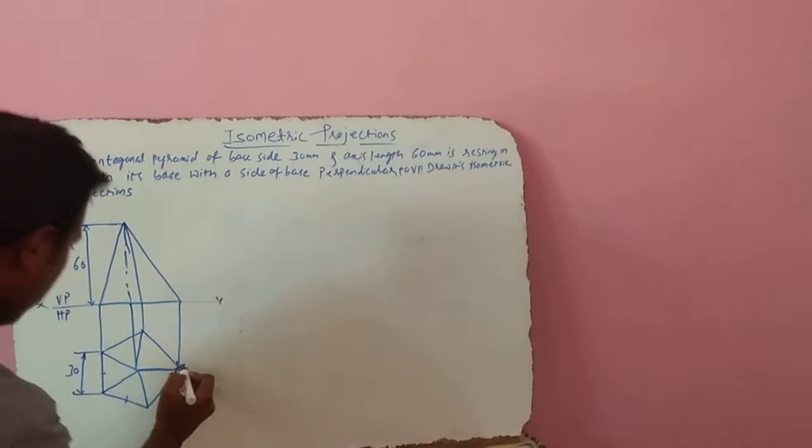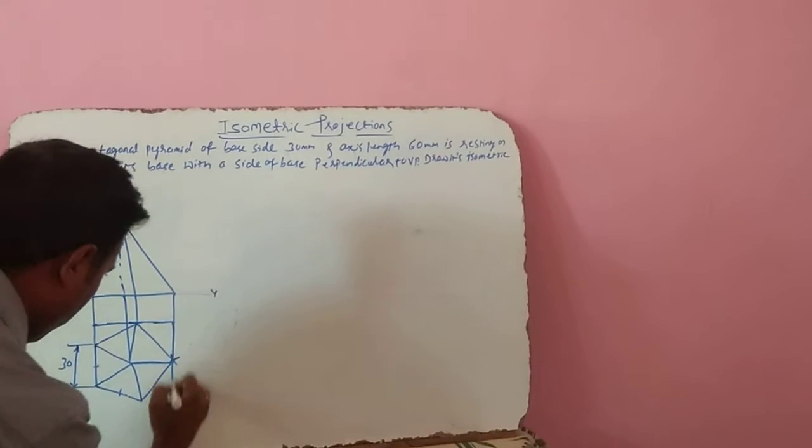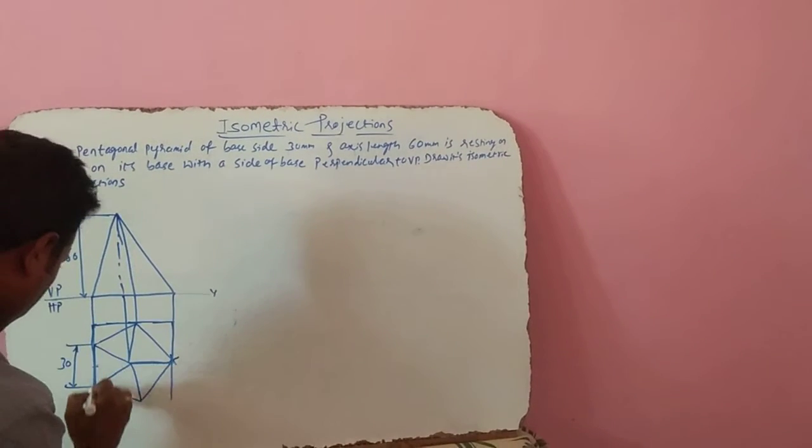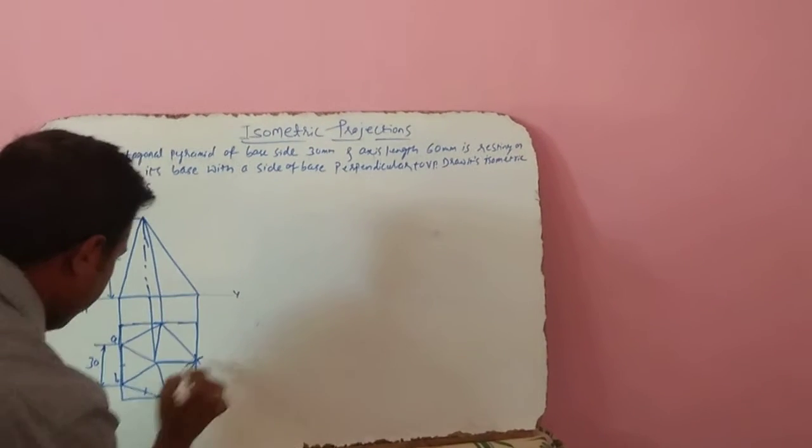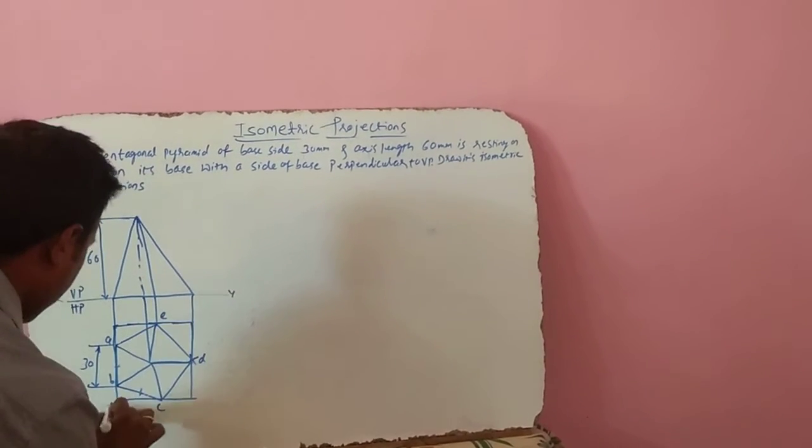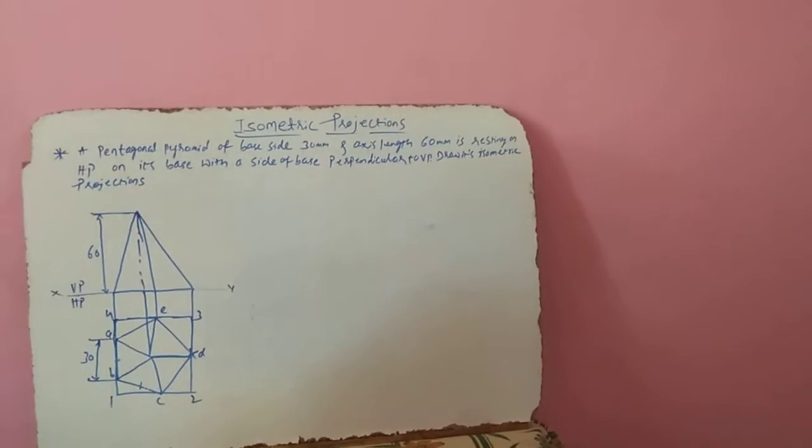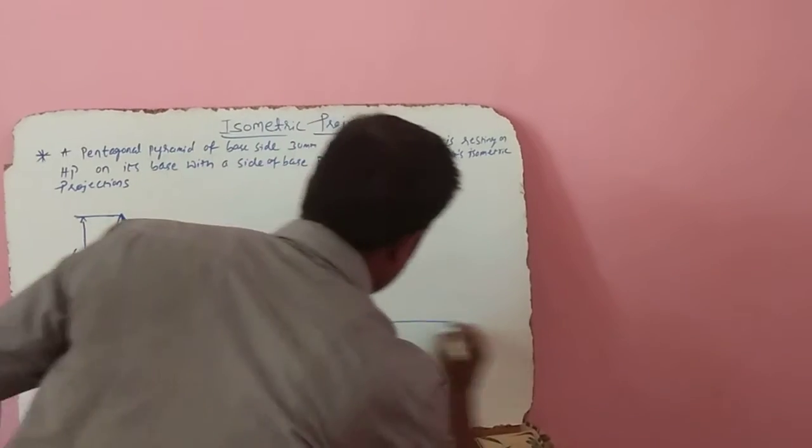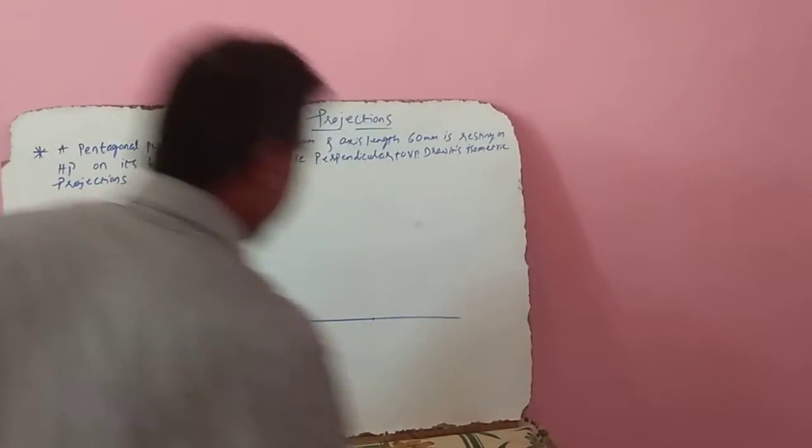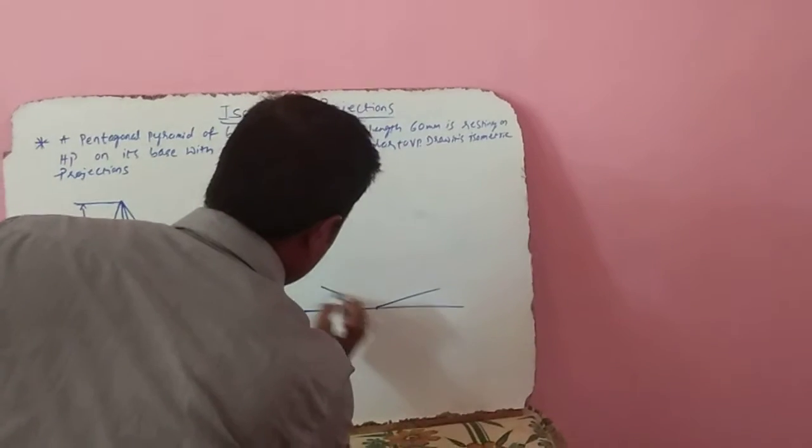Now I am putting this pentagon within the box here. We have to get the isometric projection of this one. Draw a horizontal line, mark a reference point and draw the vertical line on either side of this one.